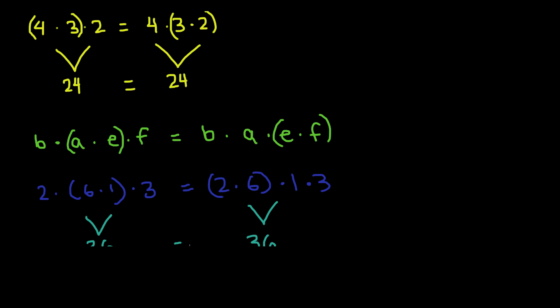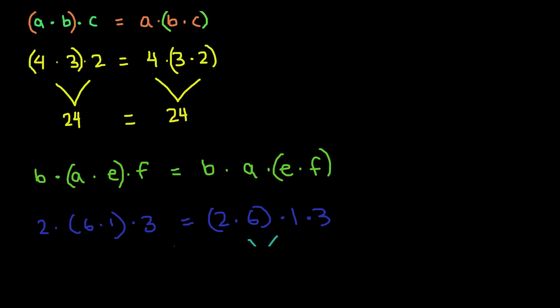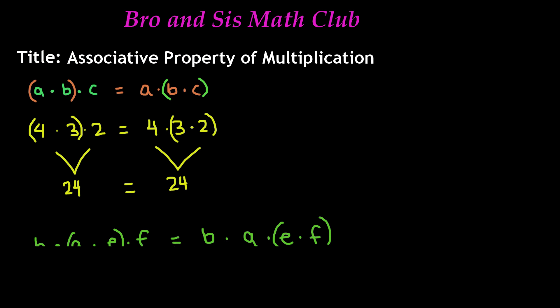And that's all there is to the associative property of multiplication. It's pretty much the same as the associative property of addition — when stating the property, you just say that it doesn't matter how you group your terms, you're still going to get the same product. Thanks for watching, and we'll see you guys next time. Bye.